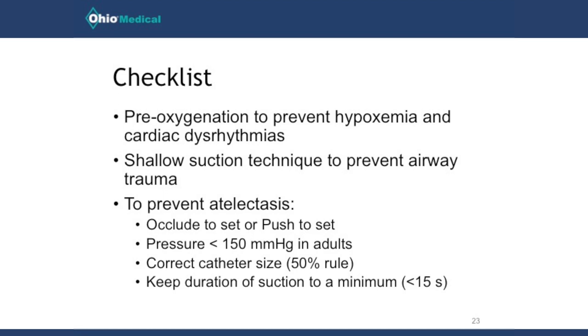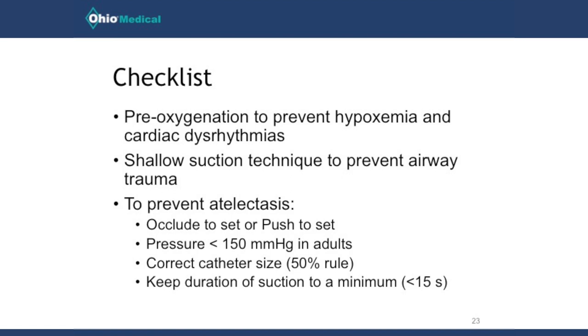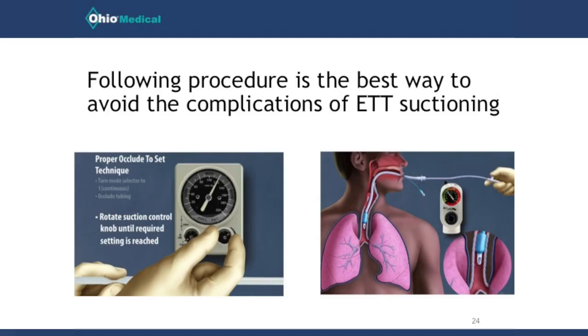You should also always use shallow suction, matching the centimeter markings on the endotracheal tube with those on the catheter as described earlier. Before every suctioning procedure, check to ensure you're not using too much suction pressure — another caregiver may have adjusted it, so the only way to ensure it's appropriate every time is to check it before every suction. To prevent atelectasis: use occlude-to-set or push-to-set; use a pressure less than 150 mmHg in adults; use a catheter that occludes less than 50% of the inner diameter of the endotracheal tube; and keep suctioning duration to a minimum — less than 15 seconds. The best way to prevent hazards is to have an appropriate policy and procedure in place and hold people accountable to it.